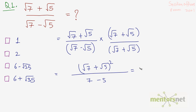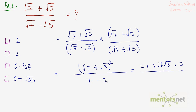Expanding: (√7)² is 7, plus 2 times √7 times √5, plus (√5)² which is 5, all over 7 - 5 = 2. So the numerator is 7 + 5 = 12 plus 2√35, and the denominator is 2.